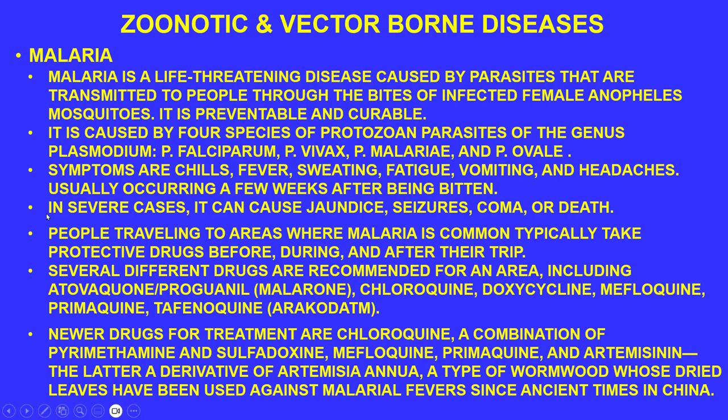One notable example is avian malaria introduced to Hawaii, where infected mosquitoes killed off bird populations at lower elevations. Above approximately 1,400 feet — where mosquitoes cannot survive — the birds remain present. This illustrates how introduced diseases can reshape ecosystems based on vector habitat limits.